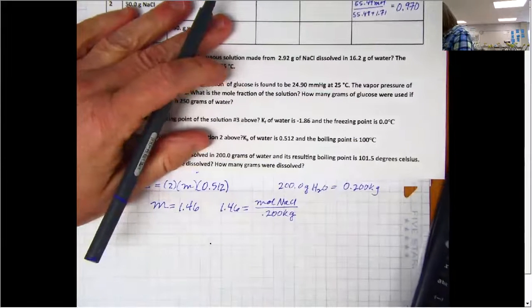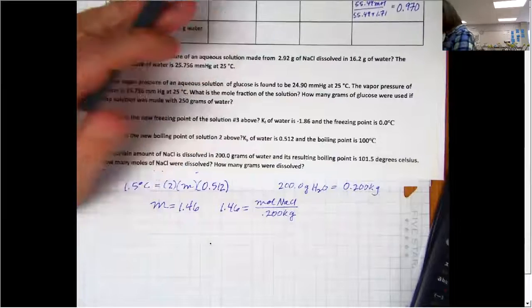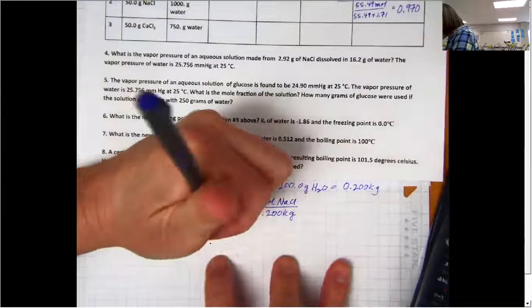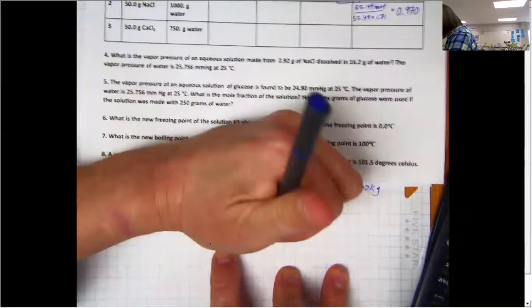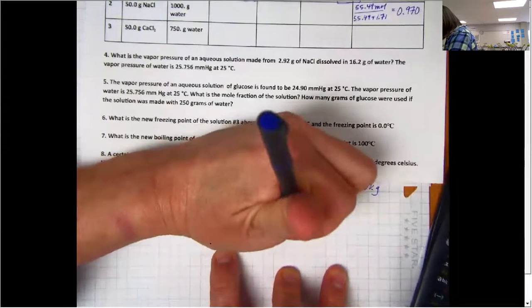I'm going to simplify this to solve for moles of NaCl. So 1.46 times 0.2. Once I solve this, I know that my moles of sodium chloride are going to be 0.292 moles.